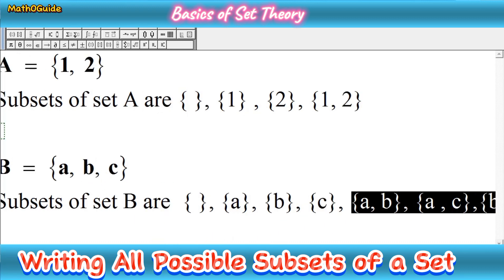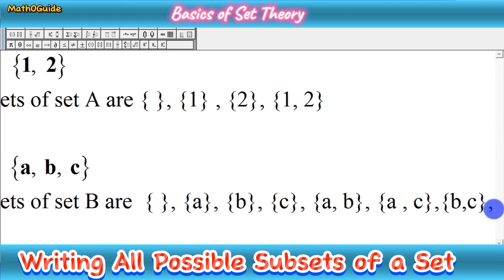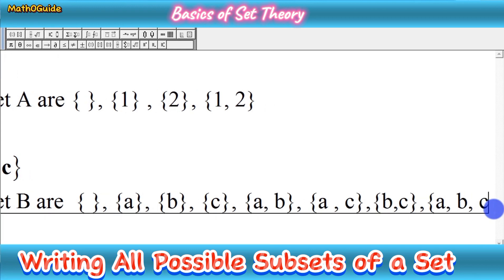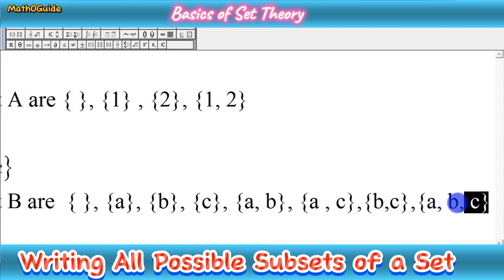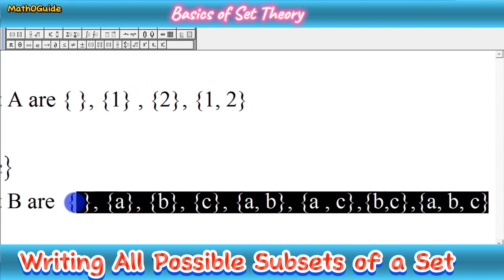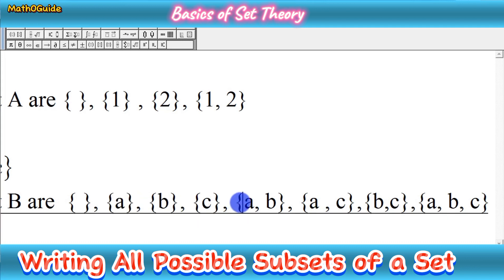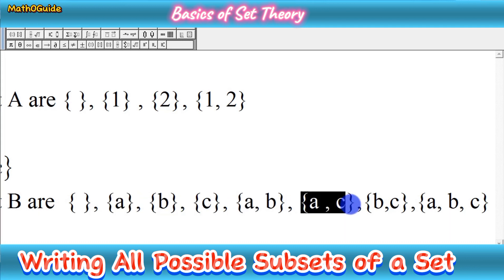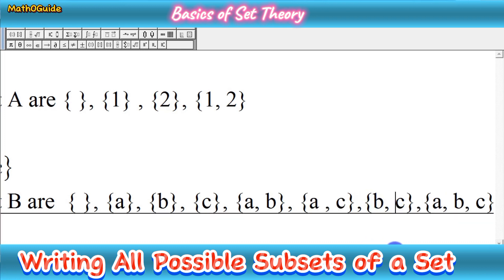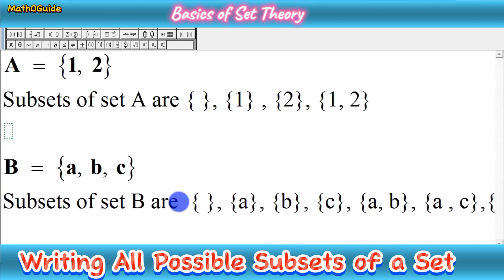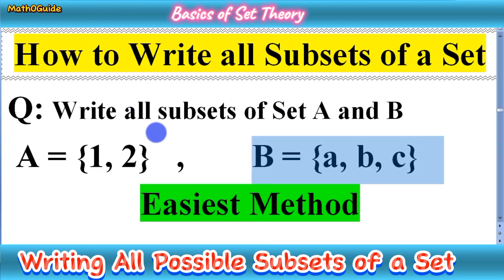Finally, we write the improper subset with three elements: {A, B, C}. This is the last subset in every question. Set B has eight subsets in total — the empty set, then single-element subsets {A}, {B}, {C}, then two-element subsets {A, B}, {A, C}, {B, C}, and finally the improper subset {A, B, C}. I hope you got the basic idea of how to write all subsets of a given set. Thanks for watching, and don't forget to subscribe.